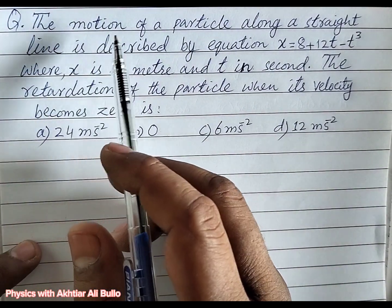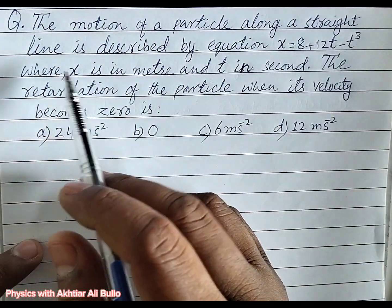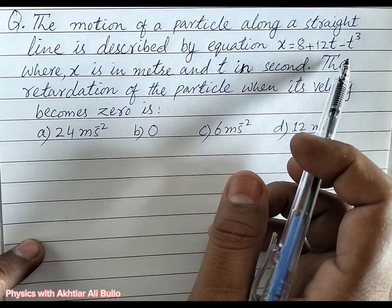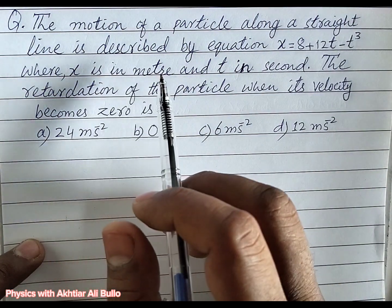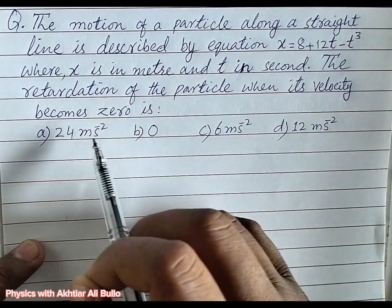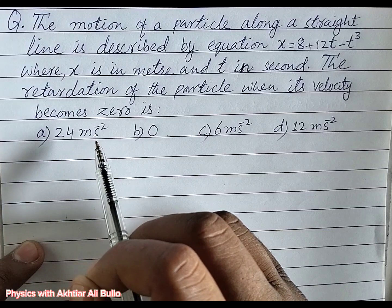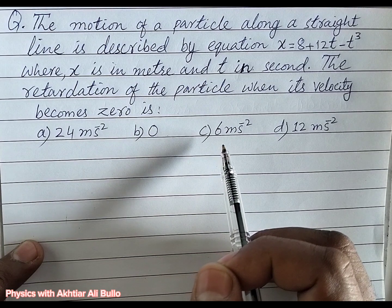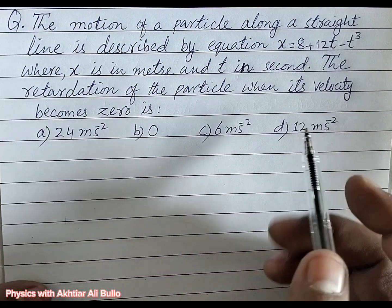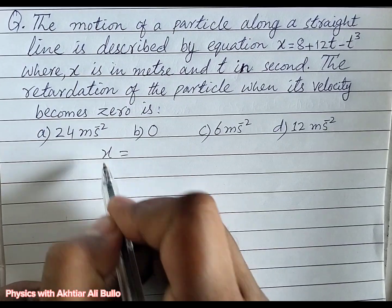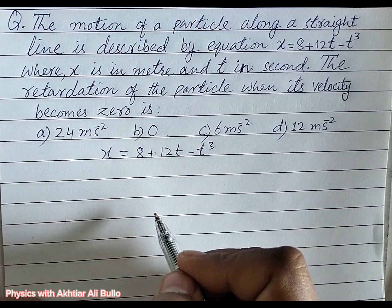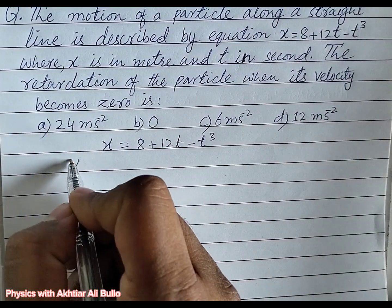The motion of a particle along a straight line is described by the equation x = 8 + 12t - t³, where x is in meters and t is in seconds. The retardation of the particle when its velocity becomes zero is: (a) 24 m/s², (b) 0, (c) 6 m/s², or (d) 12 m/s².